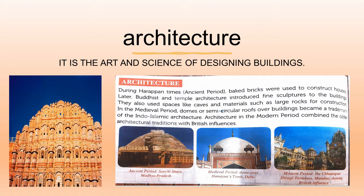During Harappan times, baked bricks were used to construct houses. In the ancient period, Buddhist monasteries and temples also used architecture along with sculptures. In the medieval period, domes — which are semi-circular roofs — were used, as you can see in the dome-shaped circular structures above buildings in Indo-Islamic architecture.